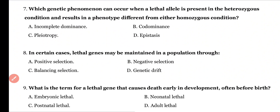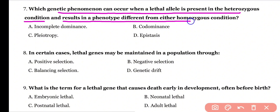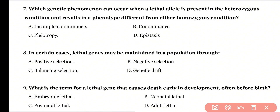Question 7: Which genetic phenomenon can occur when a lethal allele is present in heterozygous condition and results in a phenotype different from either homozygous condition? Options: incomplete dominance, co-dominance, pleiotropy, or epistasis? Correct answer is option A. In incomplete dominance, the heterozygote's phenotype is different from either homozygous parent.